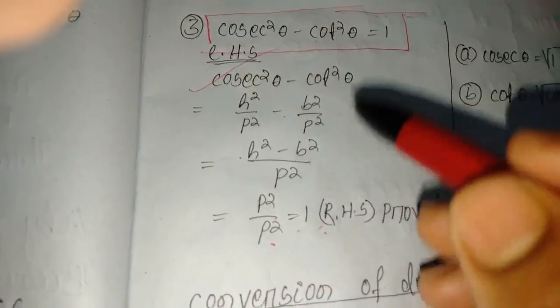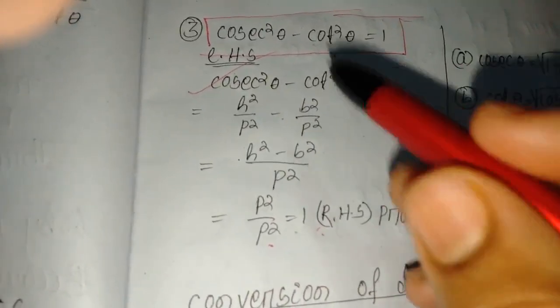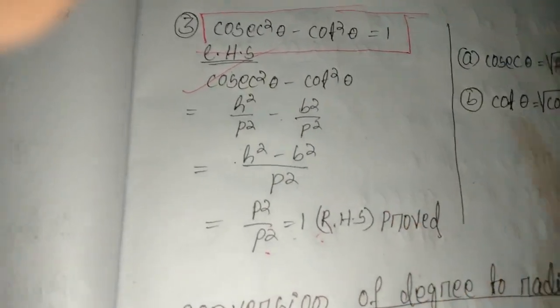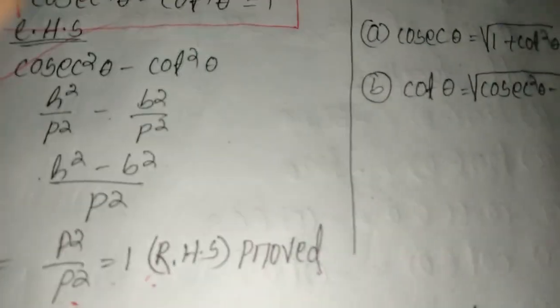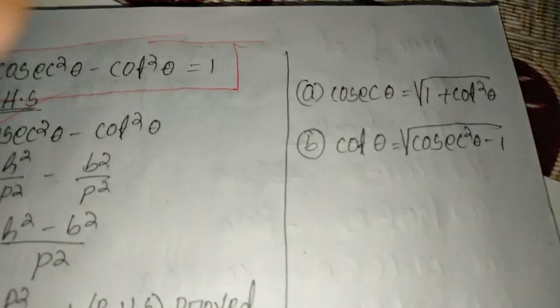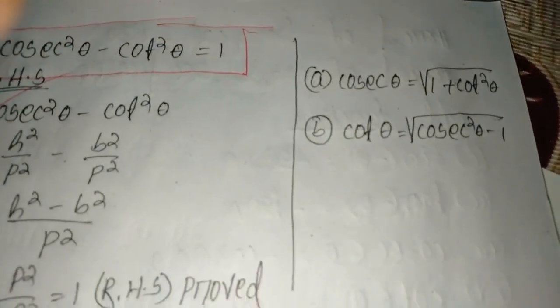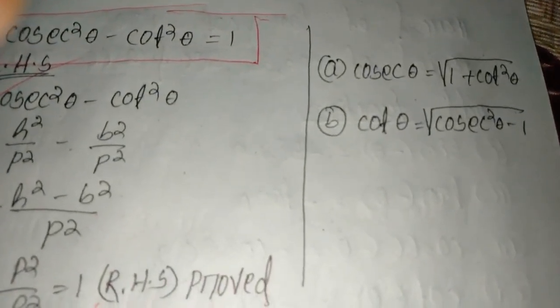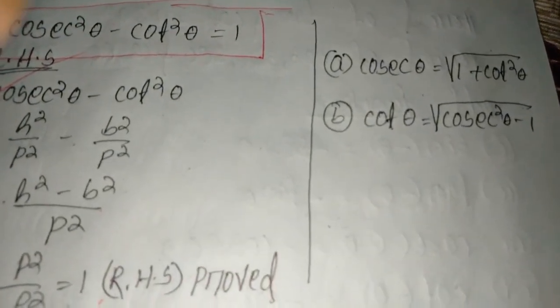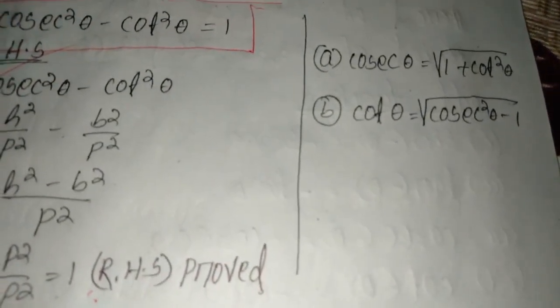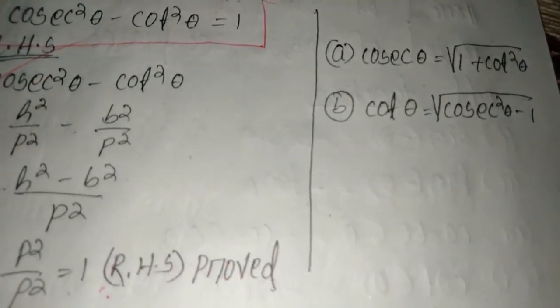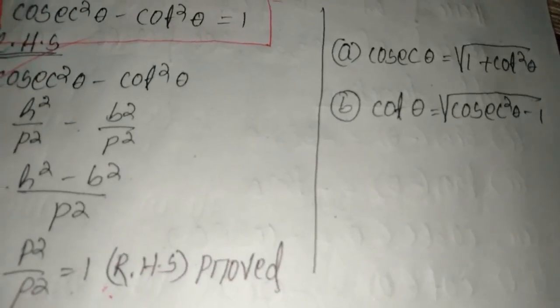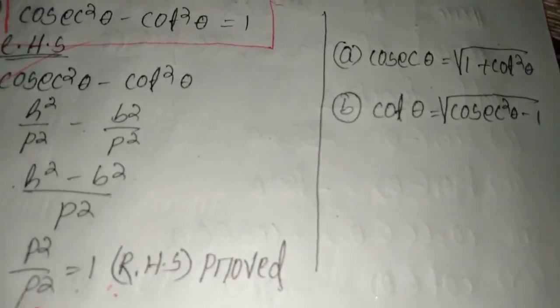From this equation we get two other formulas: cosec theta equals the square root of (1 + cot²θ), and cot theta equals the square root of (cosec²θ − 1).